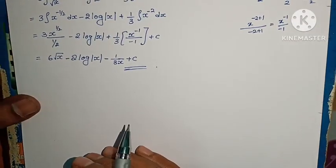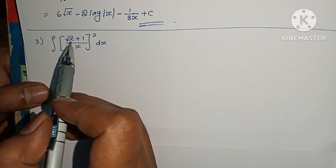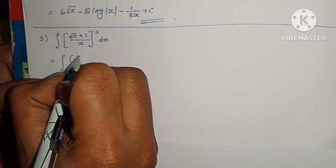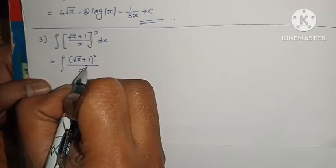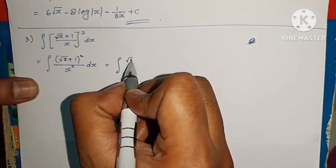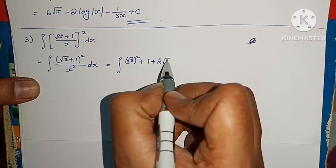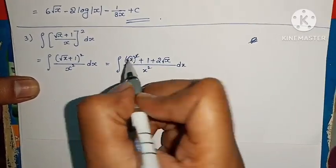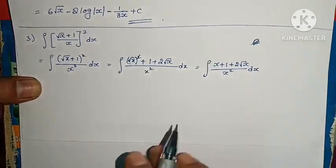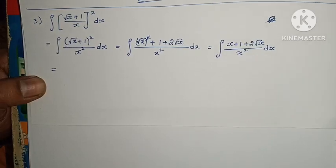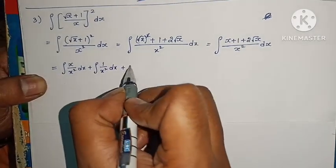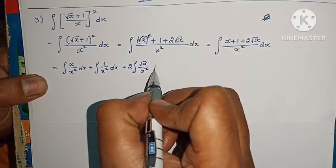Next question: integral of (root x plus 1 by x) whole square dx. Expand the whole square, separating into two: root x plus 1 whole square by x squared into dx. Apply (a plus b) whole square equals a squared plus b squared plus 2ab. So numerator becomes x plus 1 plus 2 root x. Integral of x plus 1 plus 2 root x by x squared dx. Separate the denominator: integral x by x squared dx plus integral 1 by x squared dx plus 2 into integral root x by x squared dx.